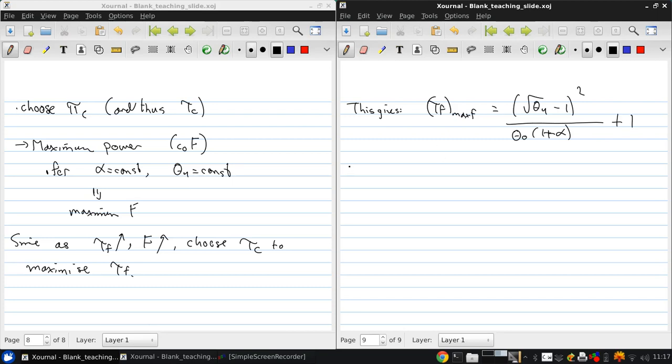So F/(ṁa_0)_max = (1 + α) times [2/(γ - 1)] times the square root of [(θ_4 - 1)²/(1 + α) + θ_0 - 1], minus M_0.